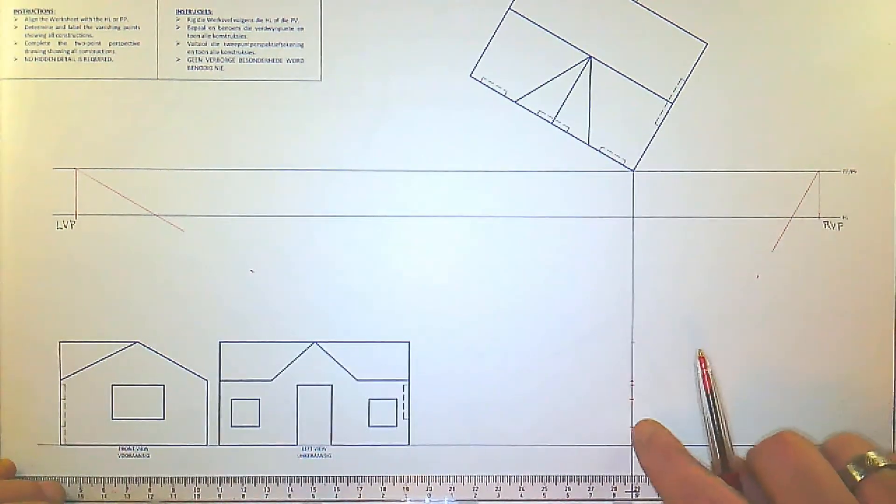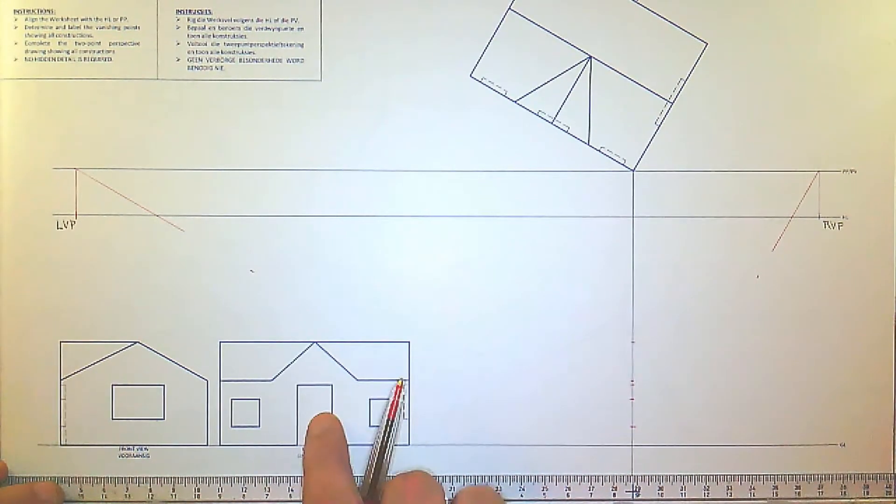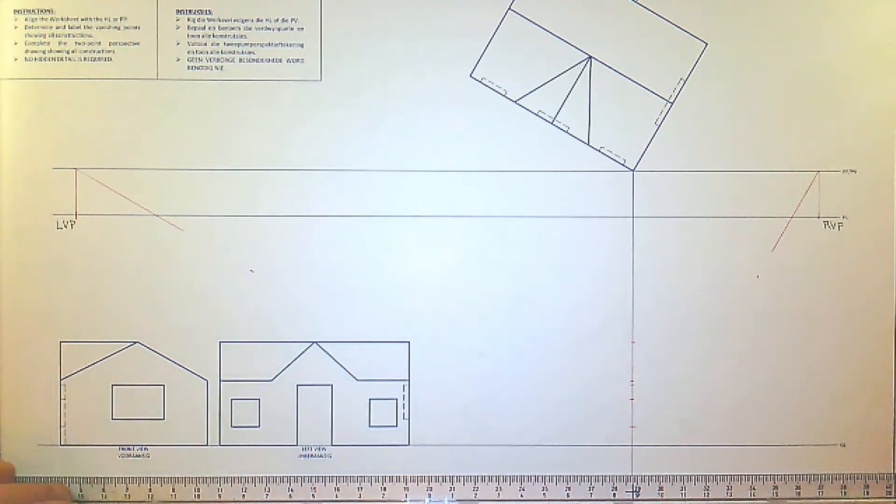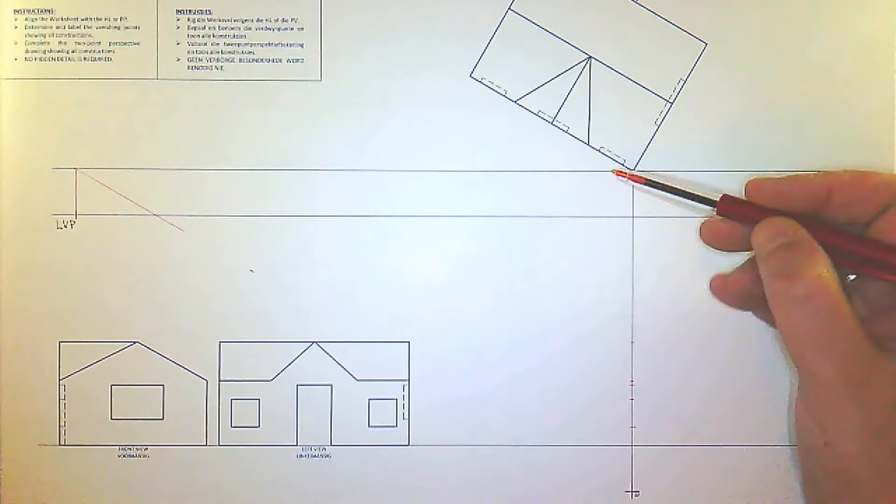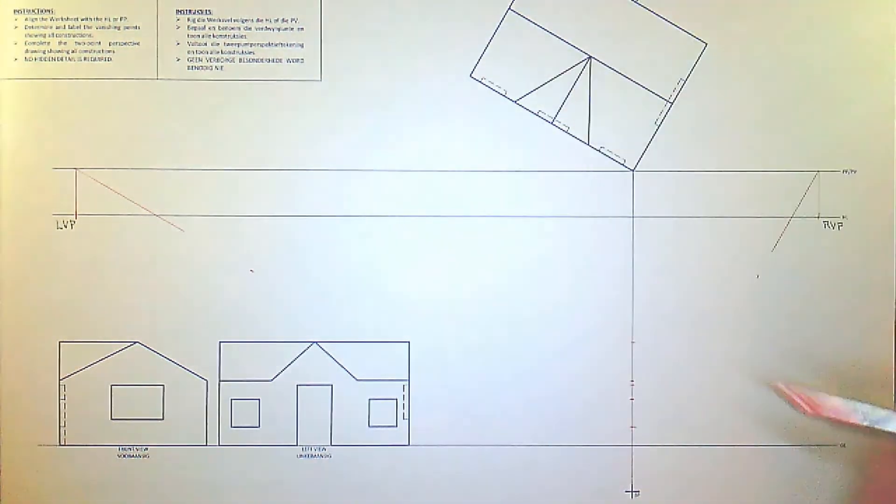And there you can see all the heights for the window, door, and roof detail. In this side of the house with most of the detail actually goes to the left, we're going to take these points and we're going to take them to the left vanishing point.